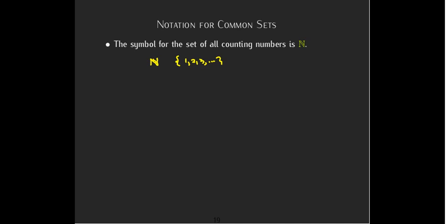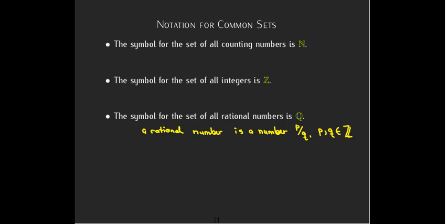All right. So the symbol for all the counting numbers, counting numbers are the numbers that were starting with 1, 2, 3, those are whole numbers starting with 1. It is this bold, stylized N. The symbol for the set of integers is the stylized Z. Z from the German word for numbers, which is Zahlen.